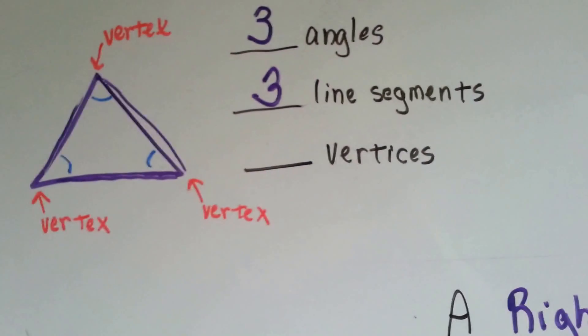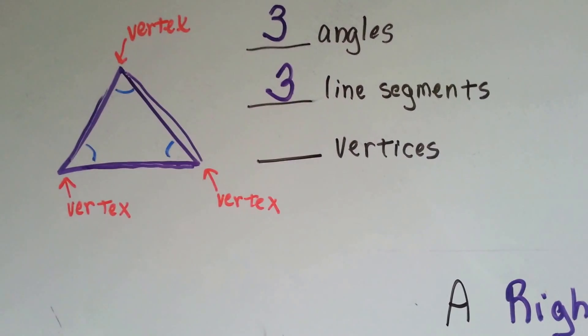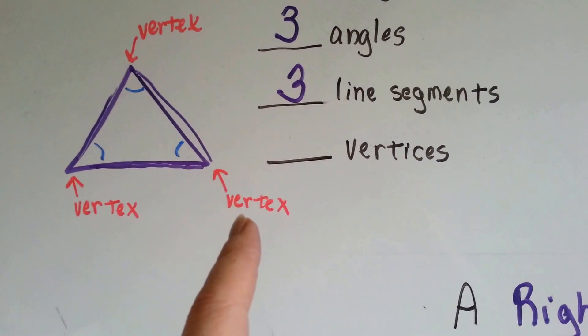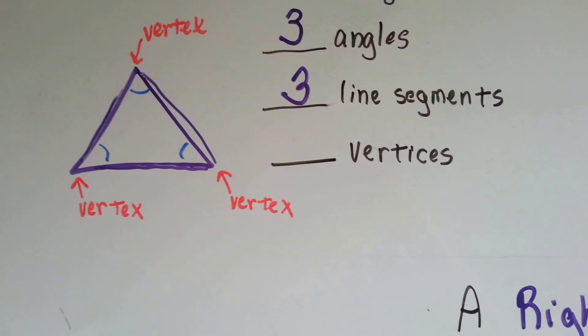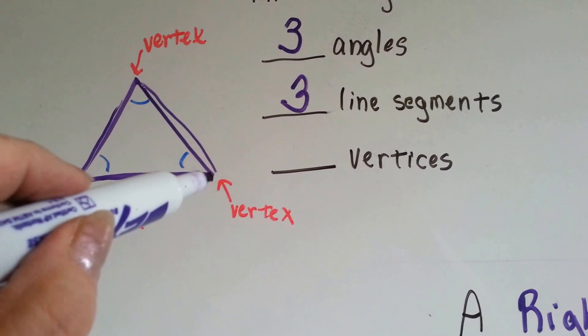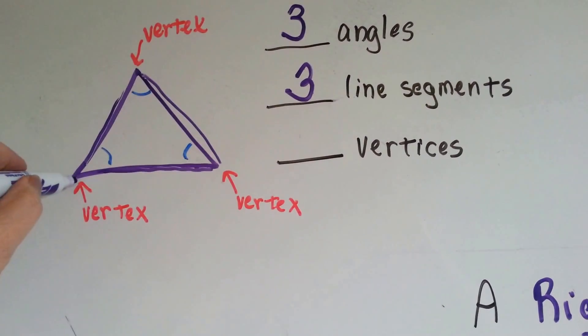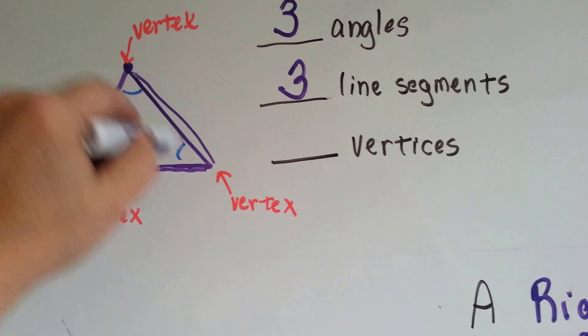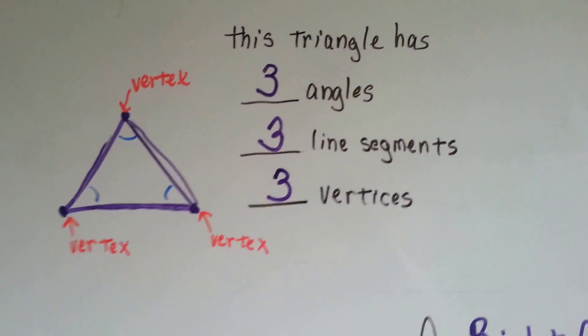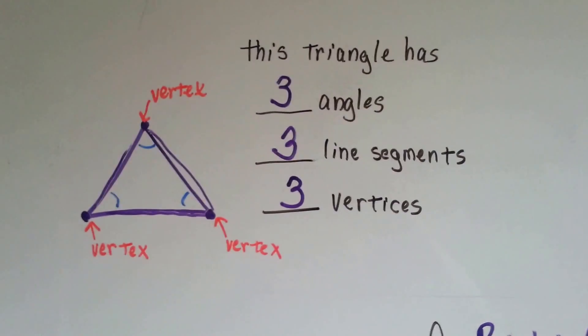There's three line segments. Now, how many vertices are there? Remember, that's the plural for vertex. One vertex, two vertices, three vertices. There's one here, there's one here, and there's one here. It's where these line segments meet, at the endpoints. So a triangle has three angles, three line segments, and three vertices.